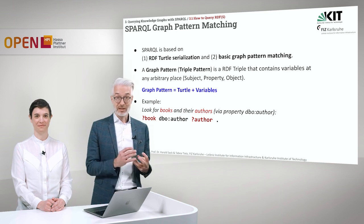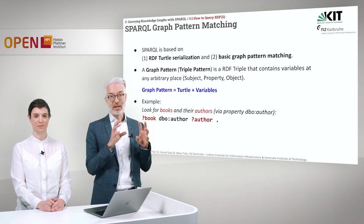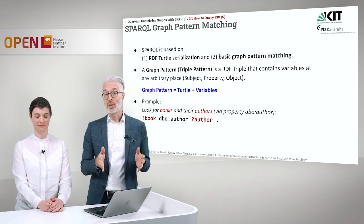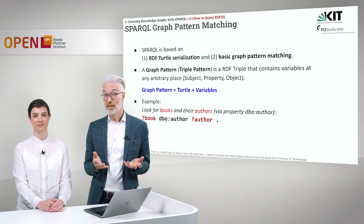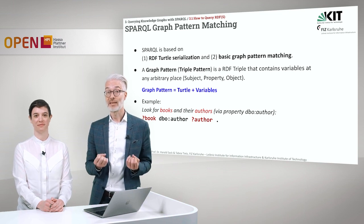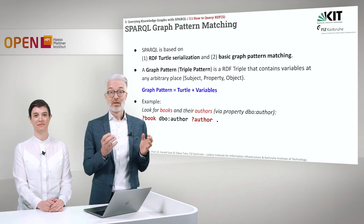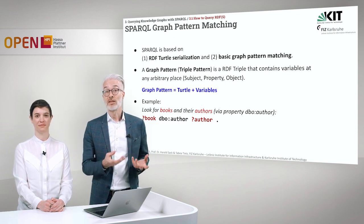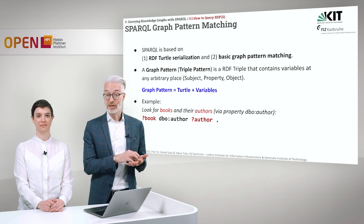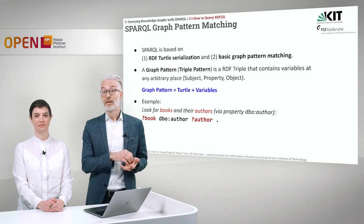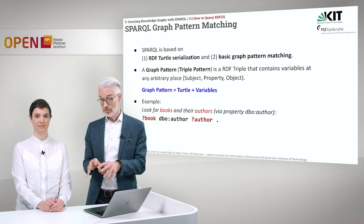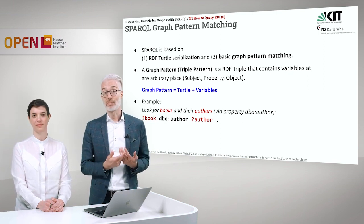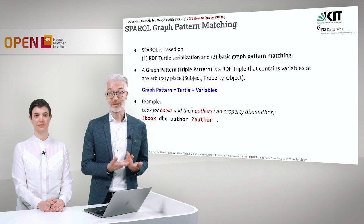In difference to SQL, which works strictly on tables, SPARQL has to work on graphs — so it does graph pattern matching. When you do your query, you use RDF Turtle serialization structures. When traversing the graph, you do pattern matching with triple patterns or graph patterns. A graph pattern simply consists of a Turtle expression where at specific points in your triple you have variables.